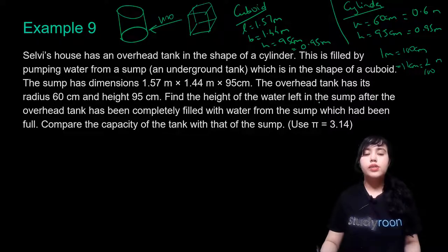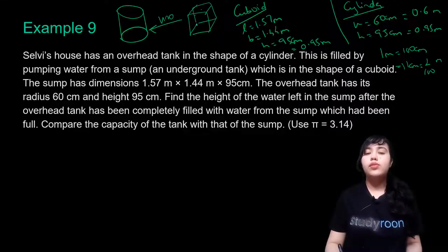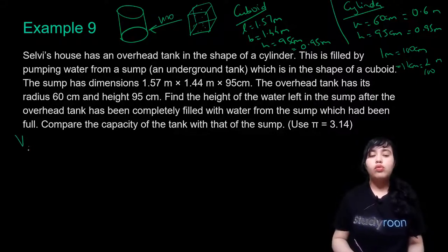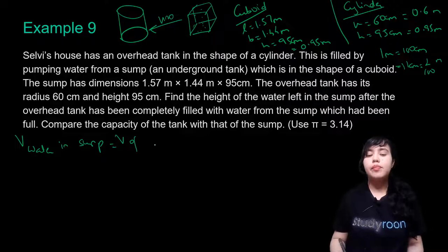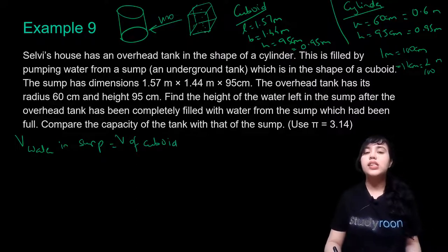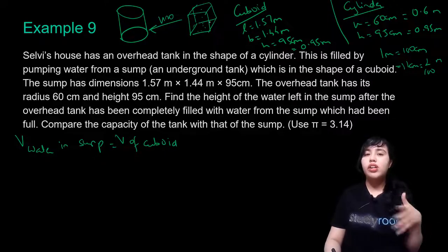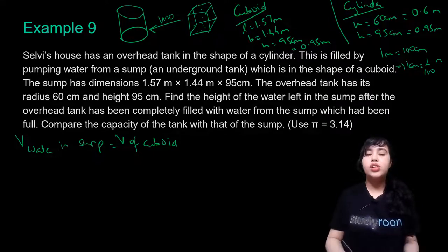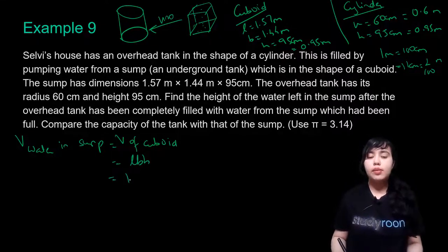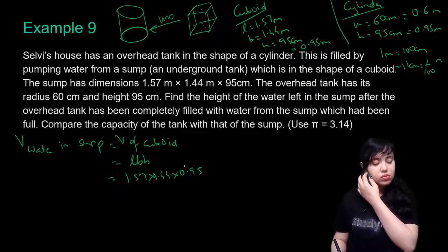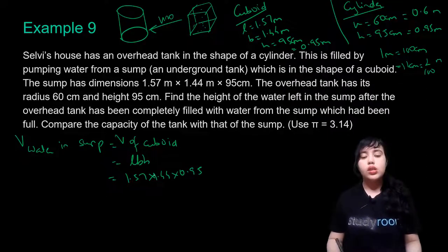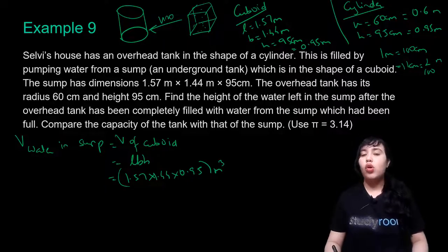We need to find the height of water left in the sump after the overhead tank has been completely filled. Initially the sump was completely filled with water, so the volume of water in the sump equals the volume of the cuboid: L × B × H = 1.57 × 1.44 × 0.95 cubic meters.